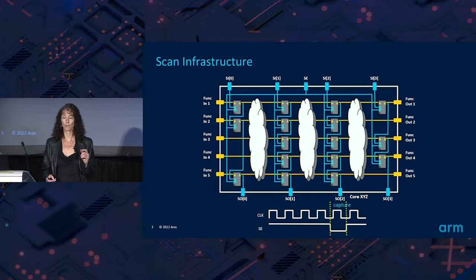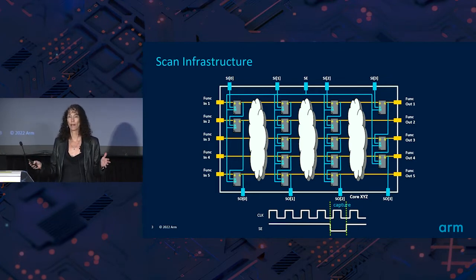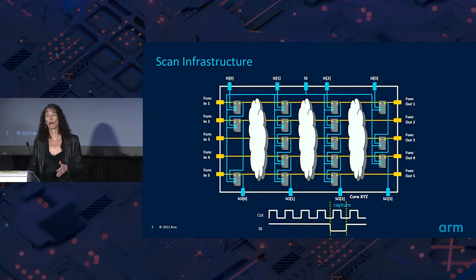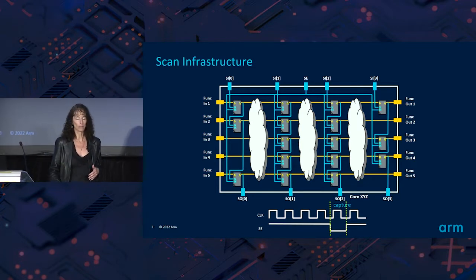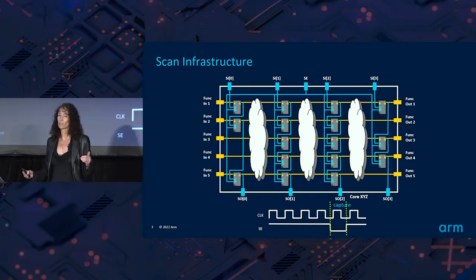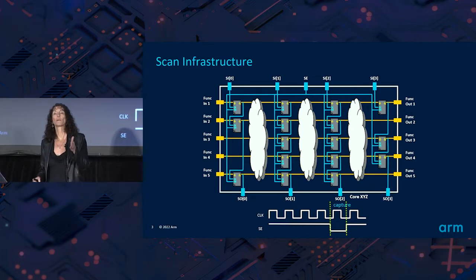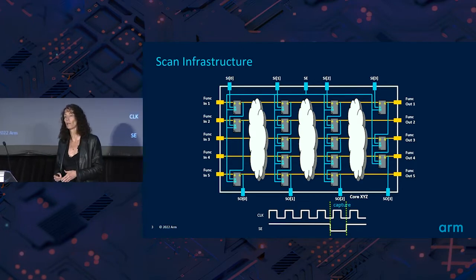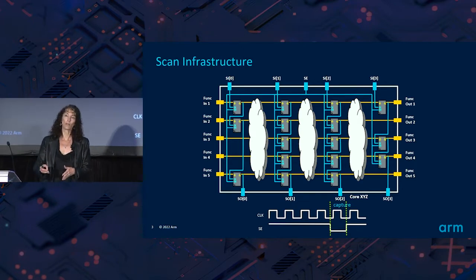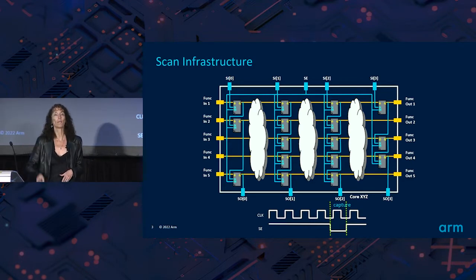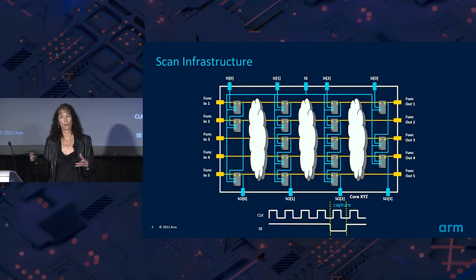When we go from slow shift to high-speed capture, we bang the whole clock tree with at-speed clocks. In functional operation, you have at-speed clocks and VDD down to a certain level. When you go from slow shift to high capture, you get this ground bounce, and you have to be careful of that.